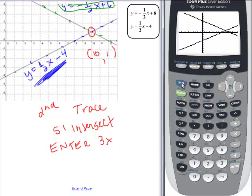And then again, 2nd, trace, option 5, and then enter, enter, enter. And the intersection, it tells me, is 10, 1, just like we had here.